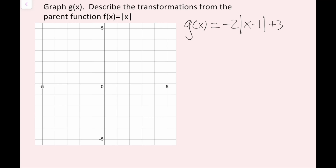We're going to graph g of x and then describe the transformations from the parent function f of x equals the absolute value of x. Anytime I'm graphing an absolute value function, the first thing I want to do is find the vertex. Then I want to figure out whether it's going to be a V-shaped graph or upside-down V-shaped graph. Last, I want to figure out the slope — the absolute value of that slope, which is just the number being multiplied by x or the absolute value symbol.